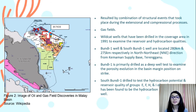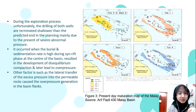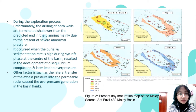Bundyfield is drilled as a deep well test to examine porosity evolution in the basin margin position on strike. South Bundyfield is drilled to test the hydrocarbon potential and reservoir quality of groups E, F, H, N, I of sandstone that has been found to be hydrocarbon bearing in Bundyfield. However, both wells were terminated shallower than planned, mainly due to the presence of severe abnormal pressure caused by high burial and sedimentation rates, resulting in disequilibrium compaction and overpressure.